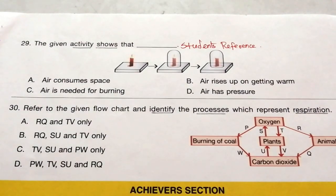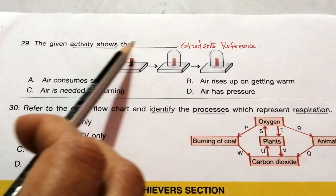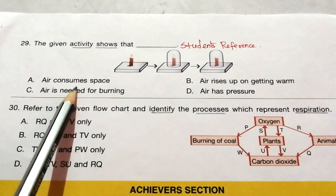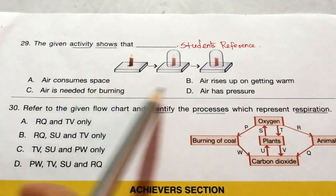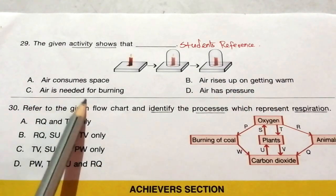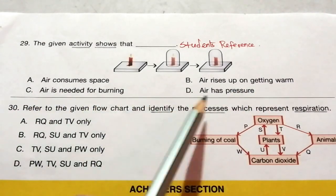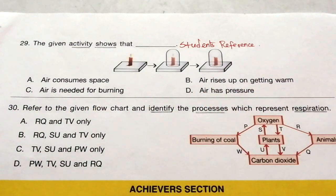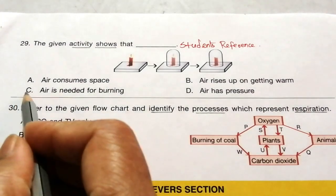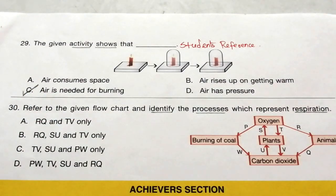Question 29: The given activity shows that: air consumes space; air rises up on getting warm; air is needed for burning; or air has pressure. The correct answer is C — air is needed for burning.